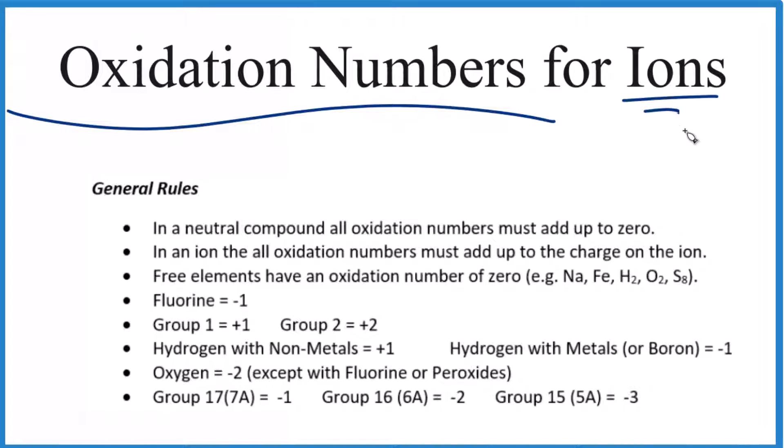Oxidation numbers for ions. That's what we're looking at here. So we have these general rules to find oxidation numbers, and the rules do include ions, but ions tend to give students a little bit of a problem there. So let's make sure we know what we're talking about.